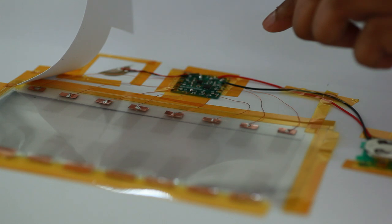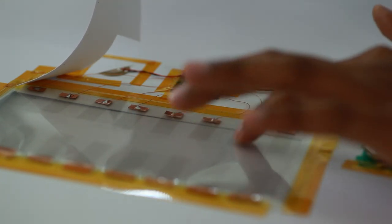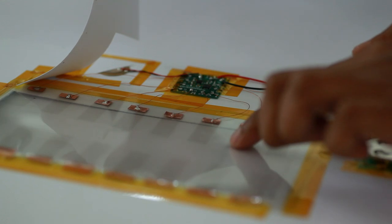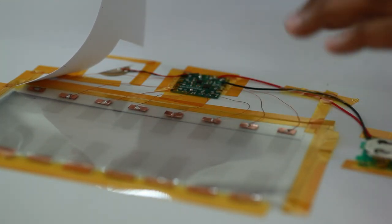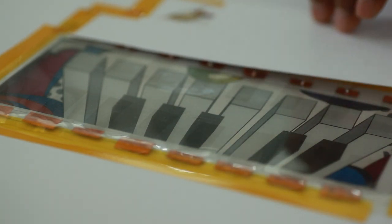The transparent keys of this piano have been printed from a graphene-based ink developed at the Cambridge Graphene Centre. This is placed over electrodes, which are connected to a simple circuit and, at the other end, to a speaker.